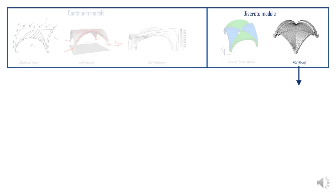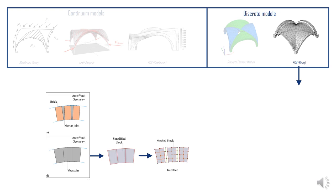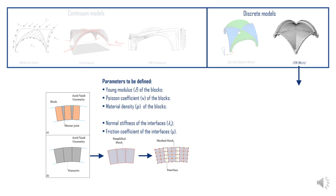According to the simplified micromodelling approach, the structure is schematised as a set of blocks, expanded to account for the mortar thickness if present, connected by equivalent interfaces representing the non-linear behaviour of mortar joints and block-to-mortar interfaces. The blocks are modelled as deformable elements with linear elastic behaviour, whose mechanical parameters are the elastic modulus E, the Poisson coefficient, and the material density.